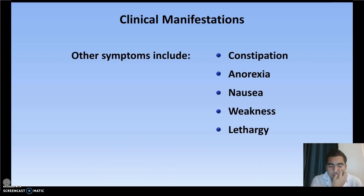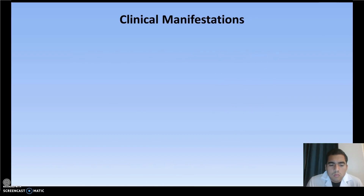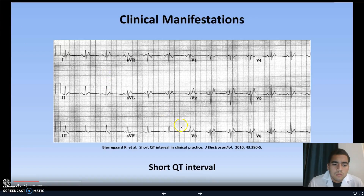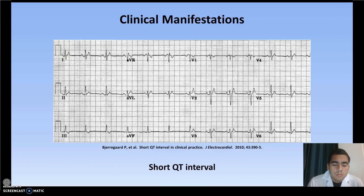When it comes to the physical exam, unfortunately there are no reliable physical findings of hypercalcemia that are sensitive or specific enough to be useful in diagnosis. There are, however, some very interesting findings that can be seen on EKG. The classic finding is an unusually short QT interval, with a near absence of the ST segment, which lies between the QRS complex and the T wave. Although there are a few very rare etiologies of a short QT interval, hypercalcemia is the only etiology that is remotely common.